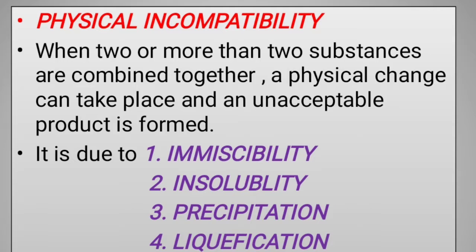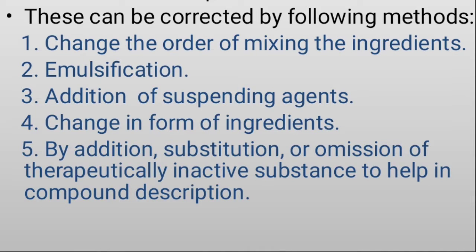Physical compatibility means two substances make one substance. It makes a physical change — that means physical incompatibility. This includes immiscibility, insolubility, liquification, and precipitation. In physical incompatibility, you can correct the method in the first place.